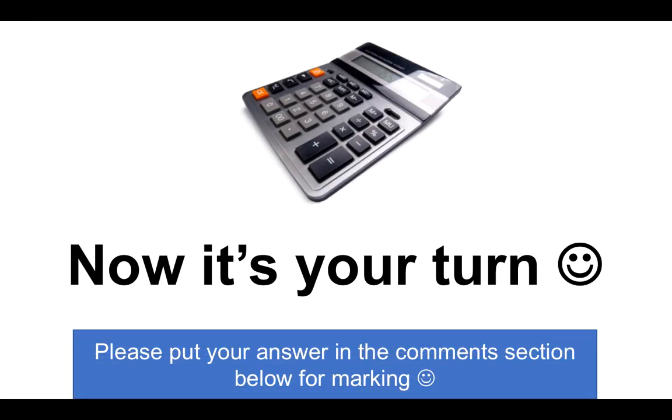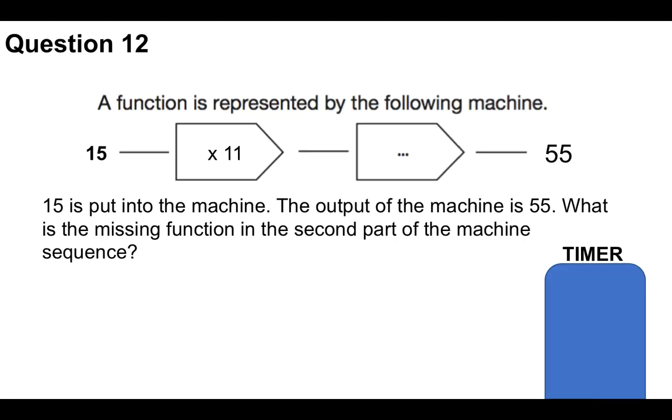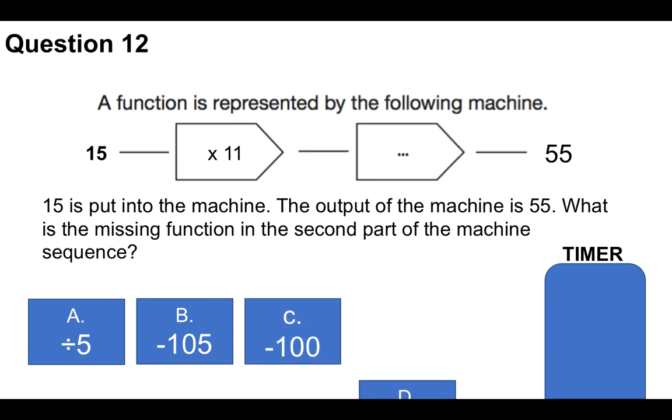Now it's your turn. Very similar one. Please put your answer in the comments section below. Question 13 for you. So 15 is put into the machine here, and then you've got times 11. The output of the machine is 55. What is the missing function in the second part of the machine sequence? Is it A: divided by 5, B: minus 105, C: divided by 100, or D: divided by 3? You've got the time it takes the timer to answer the question.